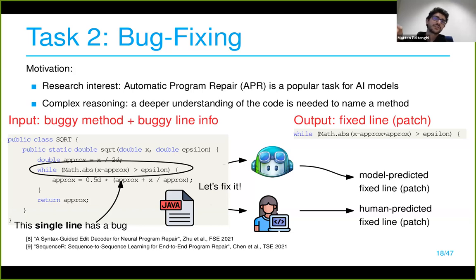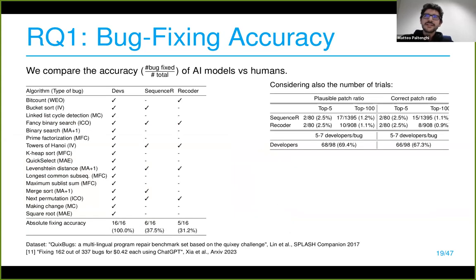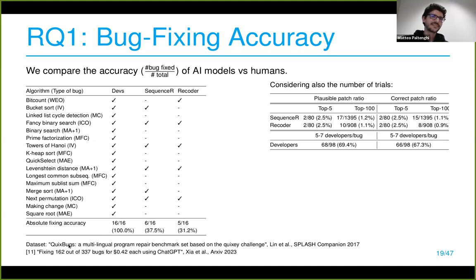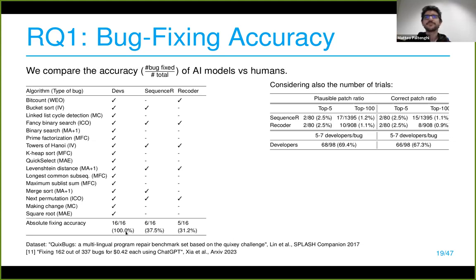The results: first we assess accuracy for the two AI models and humans. We have a dataset of 16 bugs from the QuixBugs dataset in Java. We study two models: Sequencer, a sequence-to-sequence model, and Recorder, a slightly more complex model using tree attention. Each person was given four bugs to fix, and we had at least four to seven humans per specific bug.